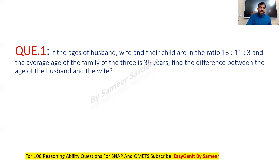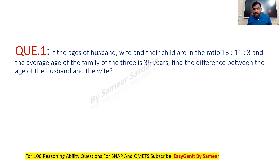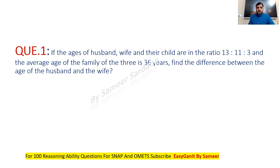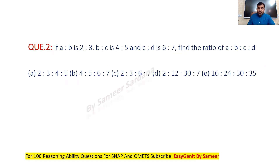So I will now be starting with arithmetic chapters and the first topic I'm picking in arithmetic is ratio, proportion and partnership. Now let's have a look at the questions of ratio, proportion, partnership. In total we will be doing 20 questions of ratio, proportion, partnership which will take you through all possible types of questions relevant for the SNAP exam. Let's quickly have a look at these questions.